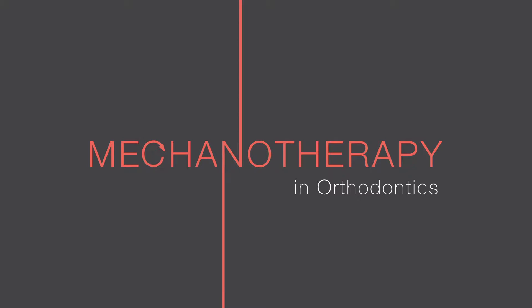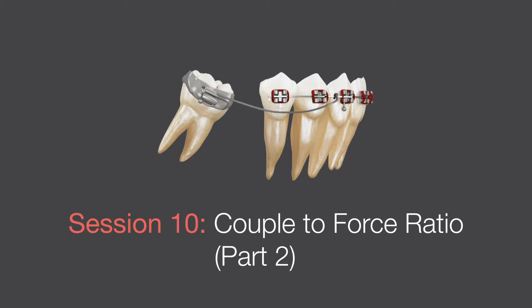Today we're talking about the second part of the couple-to-force ratio discussion. From the previous session, we said that we don't need to change the point of application of the force — just by adding simultaneously a couple to our system that produces a moment in the opposite direction of the moment of the force, we can produce all types of tooth movement. That's the reason we call it couple-to-force ratio and not moment-to-force ratio — to differentiate between the moment produced by the couple from the moment produced by the force.